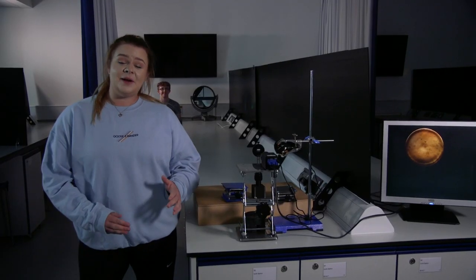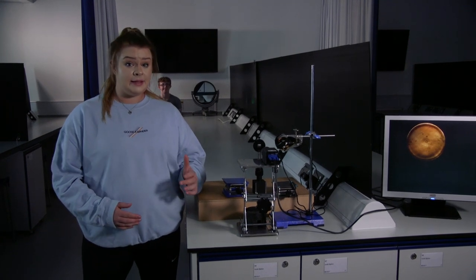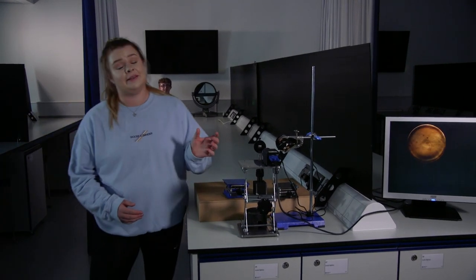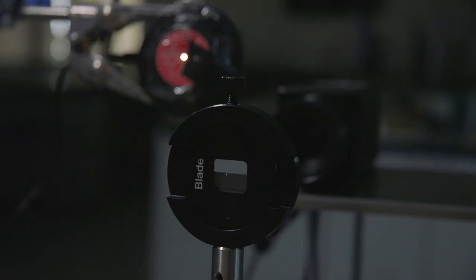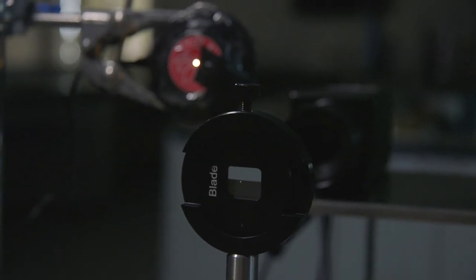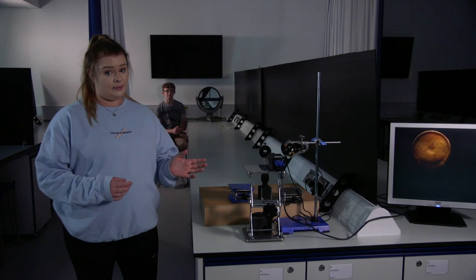This is the Schlieren experiment. It allows us to visualize the change in refractive index of air with heat. It's done by using this pinhole light source, which then reflects onto a spherical mirror and focuses on this razor blade. The razor blade then splits the light, which allows us to see an amplified contrast in the images shown.